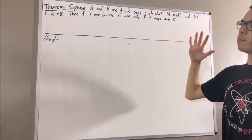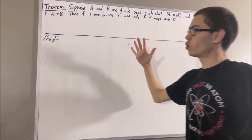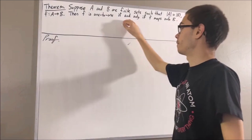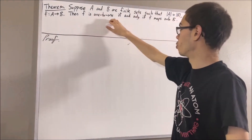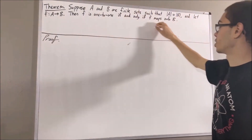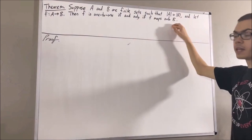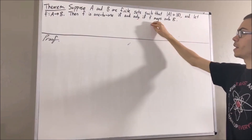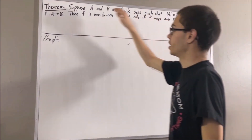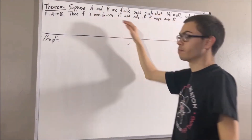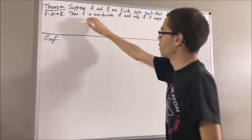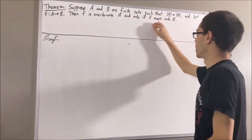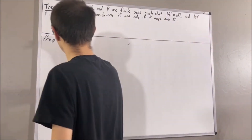We're trying to prove a statement containing if and only if. So what we're going to do is prove if the first condition is true then the second is true, and then prove if the second is true then the first is true. So let's first prove: if F is one-to-one, then F maps onto B.